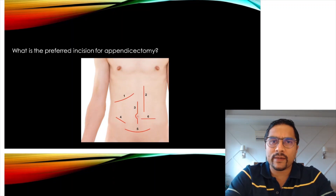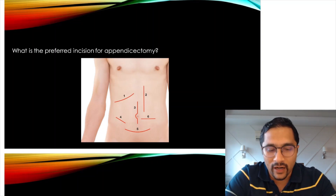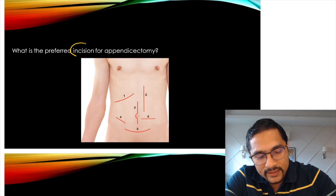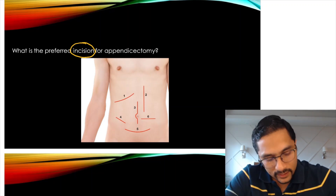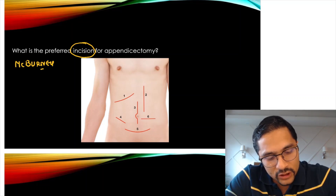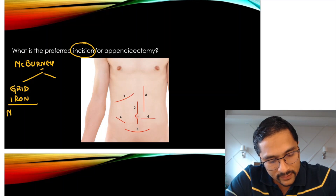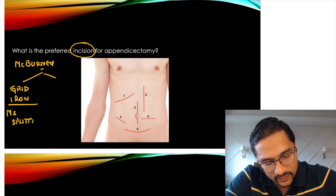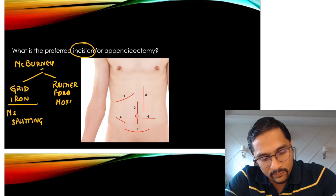Another image-based question — very easy but because it was given in image format, it threw some students off. They asked: what is the preferred incision for appendicectomy? The incisions for appendicectomy include the McBurney's incision in two types: gridiron, which is a muscle-splitting incision, and Rutherford Morris, which is a muscle-cutting incision.